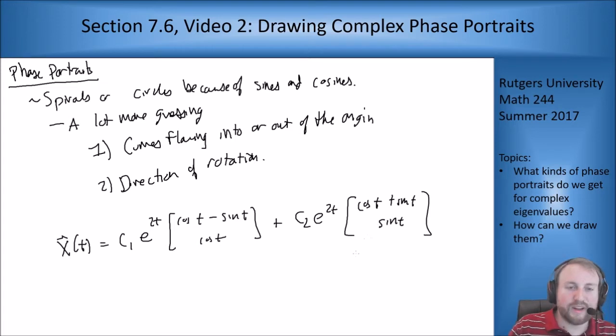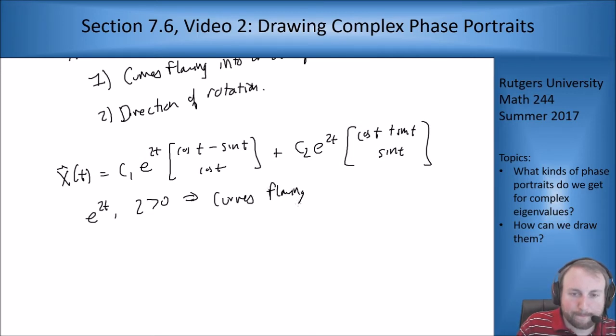So we can see right away that because both e exponents are positive, our curves are flowing away from the origin. So whatever we draw is going to have an arrow pointing away from the origin. Curves flowing out because we have a positive exponent.